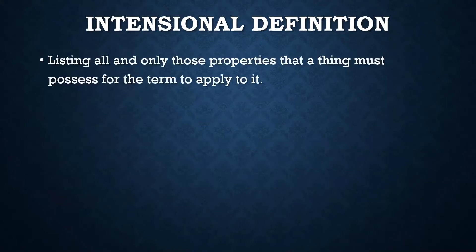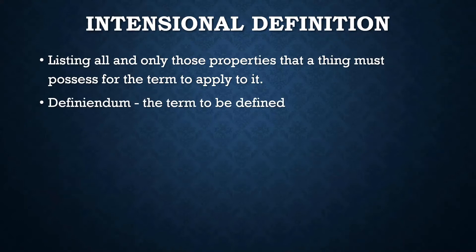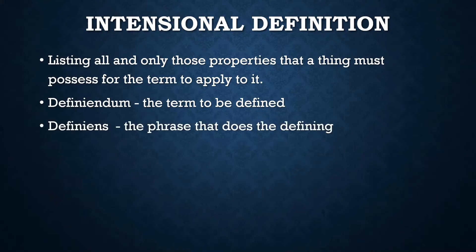Intentional definitions are done by listing all and only the properties that a thing must possess for the term to apply to it. This is the kind of definition that philosophers are especially interested in, and it's very difficult to do. The definiendum is the term that is to be defined — what you would look up in a dictionary. The definiends is the phrase that does the defining.